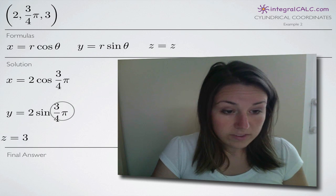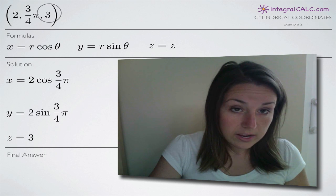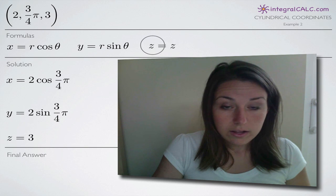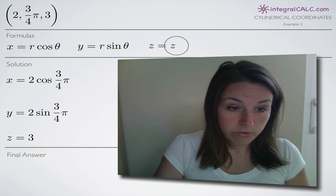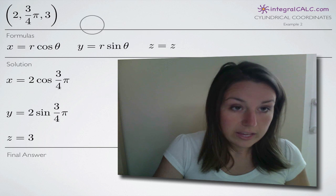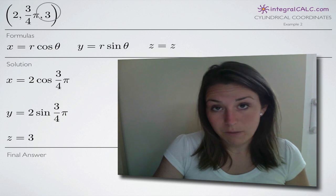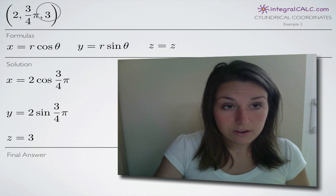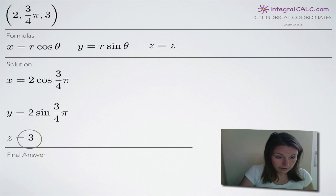We said that z was 3, so that goes into our third equation: z equals 3. We're always just going to take that third coordinate as our z — it's z in both cylindrical and rectangular coordinates, so it stays the same: it's 3.